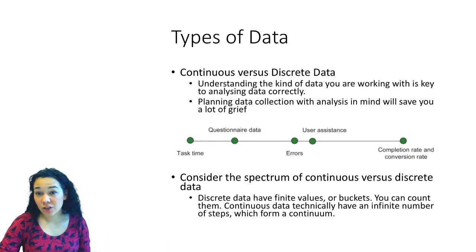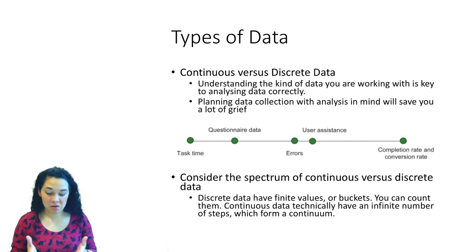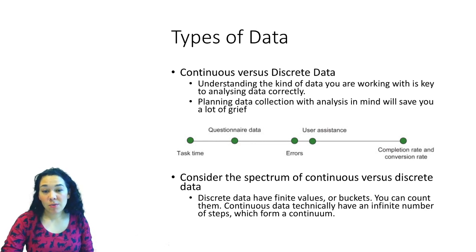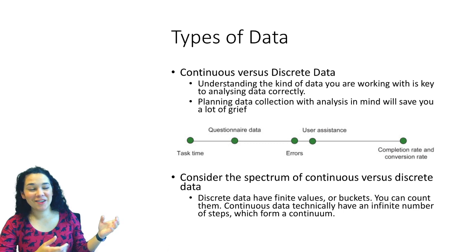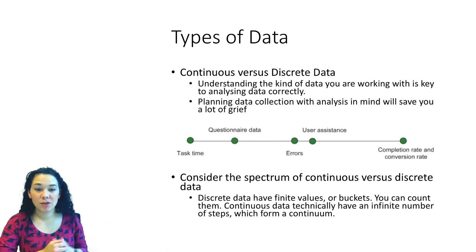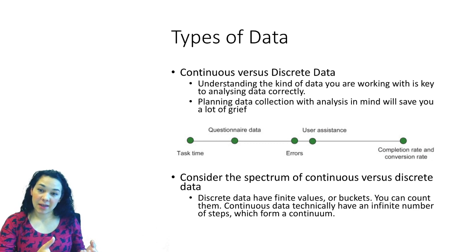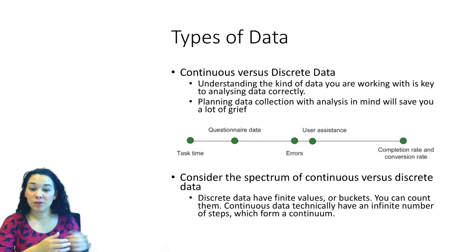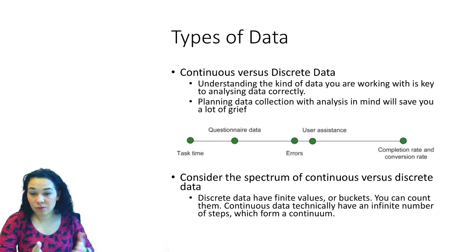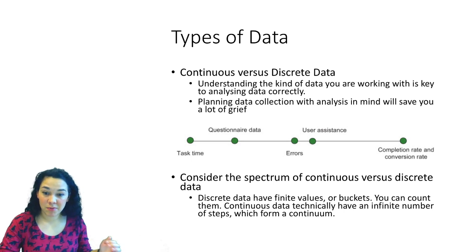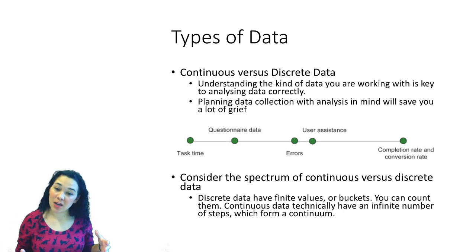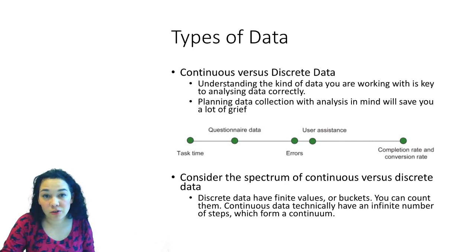Questionnaire data might be closer to continuous depending on how scales are generated. The number of errors is counted in discrete buckets but may not have an obvious upper bound, making it a little more continuous. Similarly, user assistance — the number of times we have to intervene — is a discrete value without a necessarily defined upper bound, unlike completion rate or conversion rate which do have an upper bound. We have to think about what type of data we have and what type of analysis it's going to support.